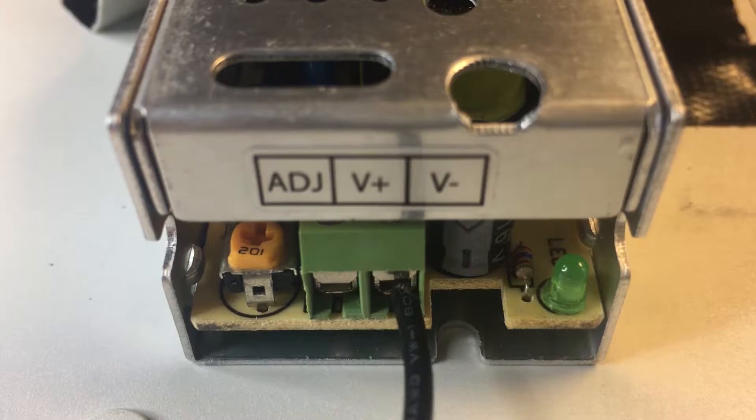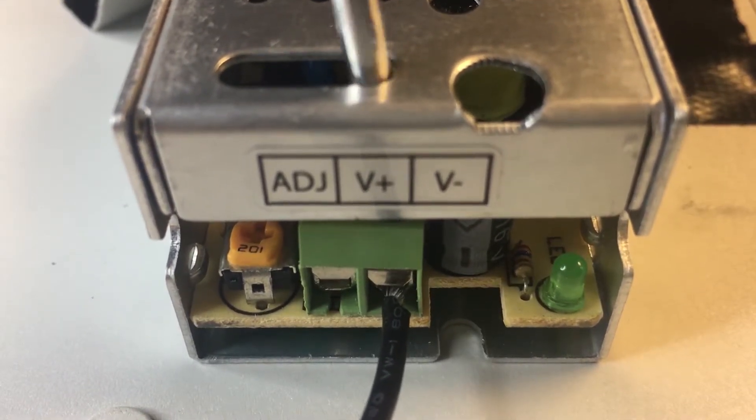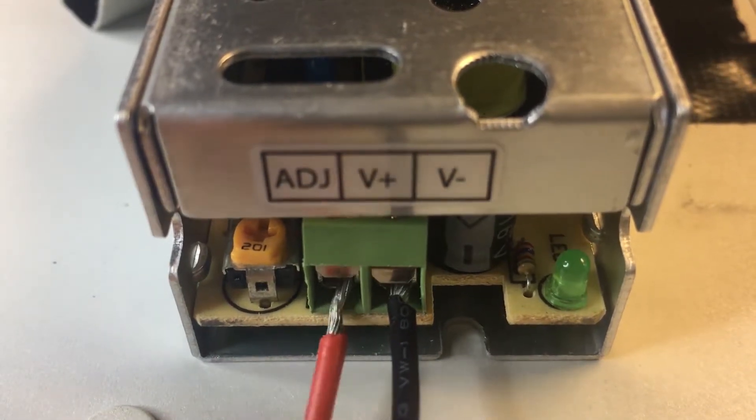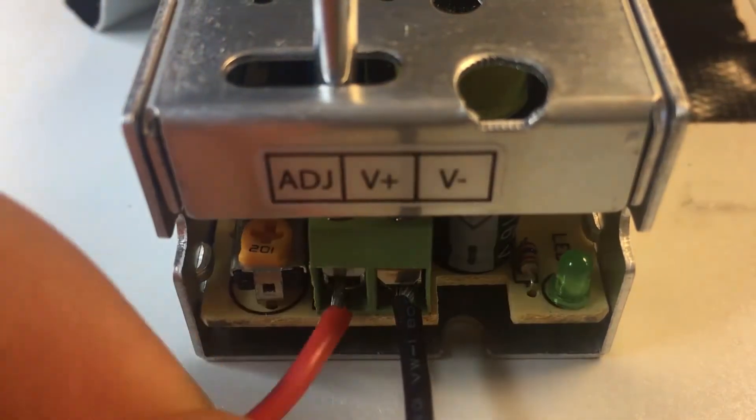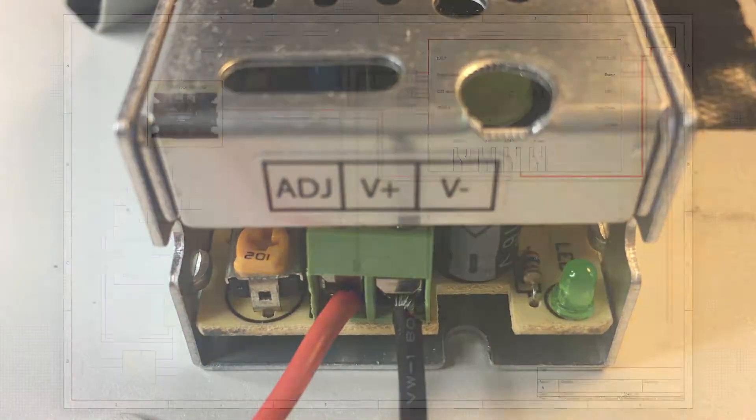This is where the power supply DC connections are connected. The V minus is the negative or black wire and the V plus is the positive or red wire. As standard practice, always check that the wires are tightly connected.